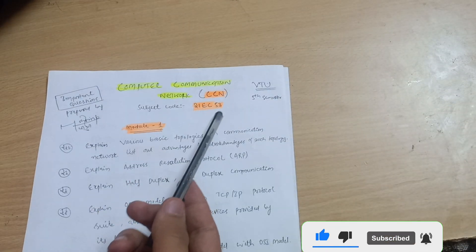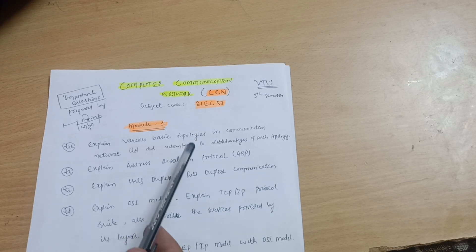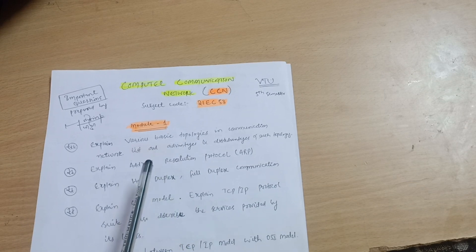21EC53. It is for the EC stream students, fifth semester. So far we have discussed the important questions for the subject Computer Organizations and ARM Microcontrollers, subject code was 21EC52. So today I will, not discuss actually,